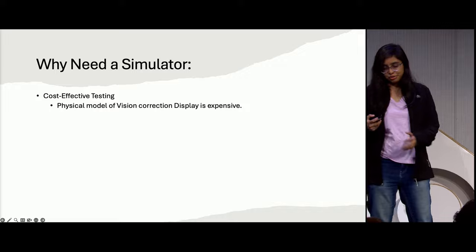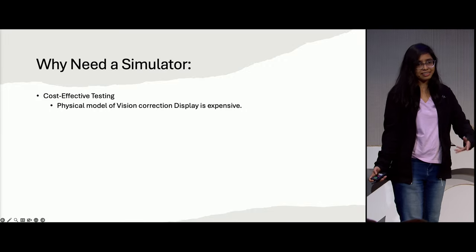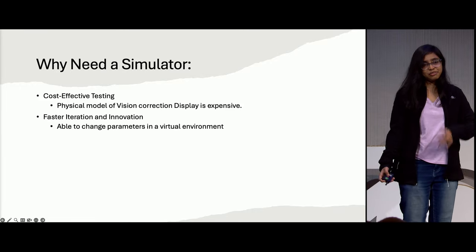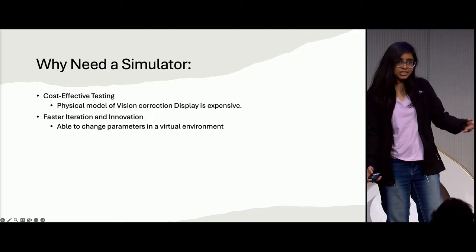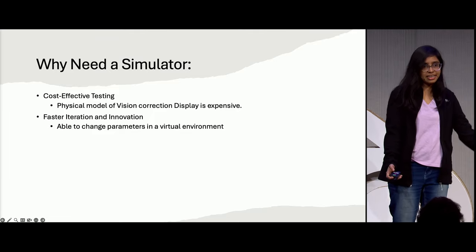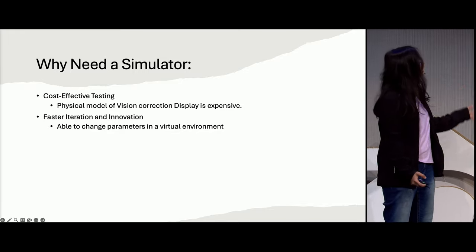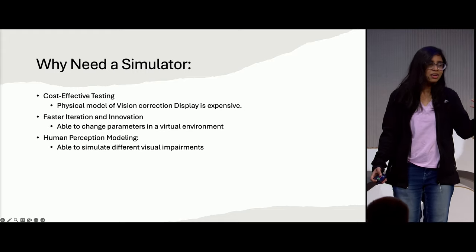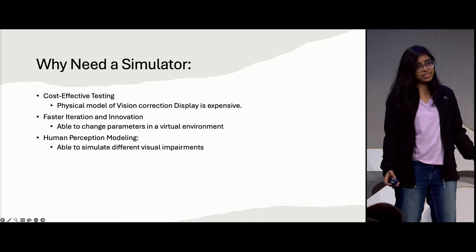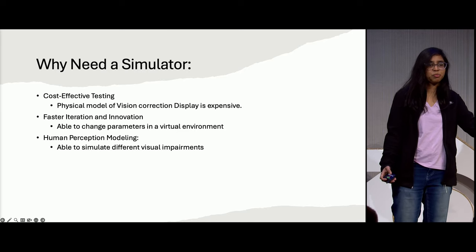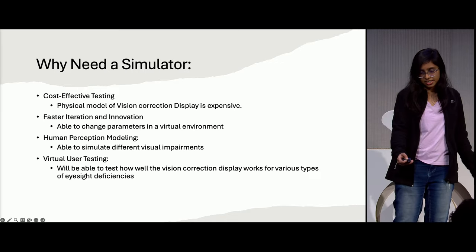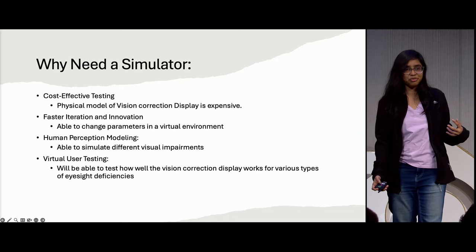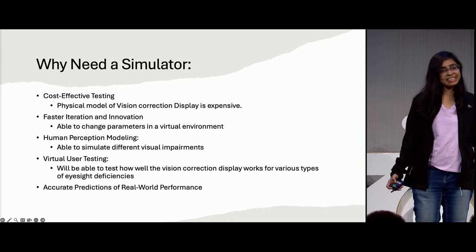With a simulator, what are the benefits? Cost-effective testing — everything physical is expensive, but Blender is free. Faster iteration — with a physical model, changing parameters means going back to production again, but with a simulator the iteration length is much shorter. We can model all different varieties of vision problems: hyperopia, myopia, astigmatism. Virtual user testing — we can test whether a person is correctly seeing the image and accurately get real-world perception.